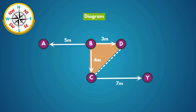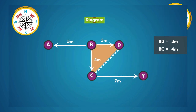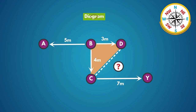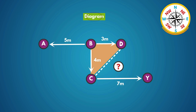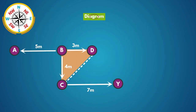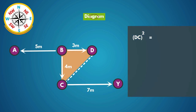Here, in the triangle, we know BD is equal to 3 meters and BC is equal to 4 meters. Now we need to find the distance between point C and point D. In the right-angled triangle, from the Pythagoras theorem, we know hypotenuse DC squared is equal to the squares of the two sides meeting at right angle — those are BD squared plus BC squared.